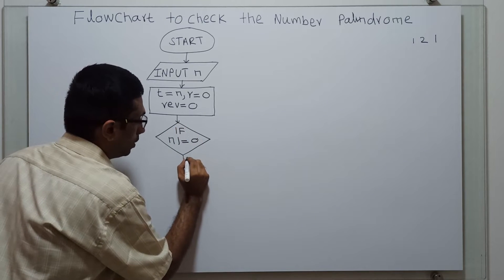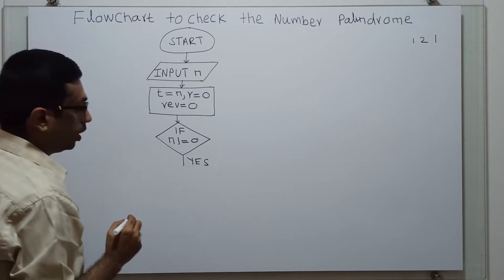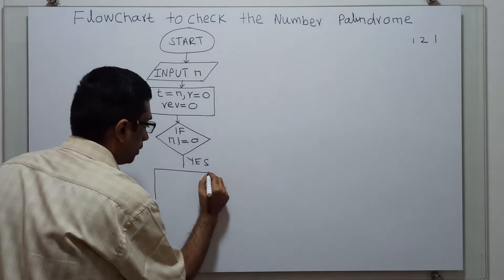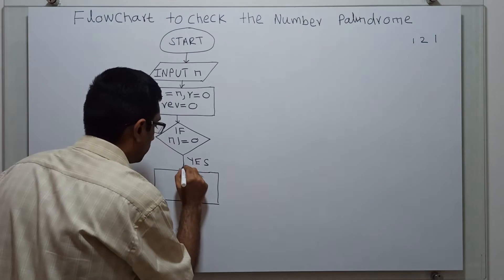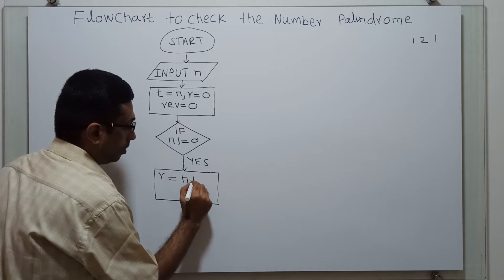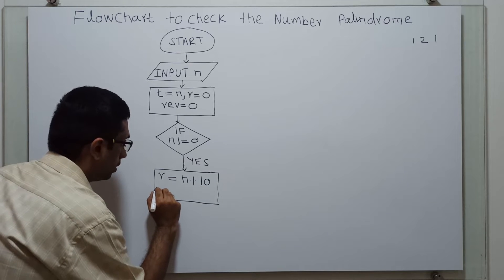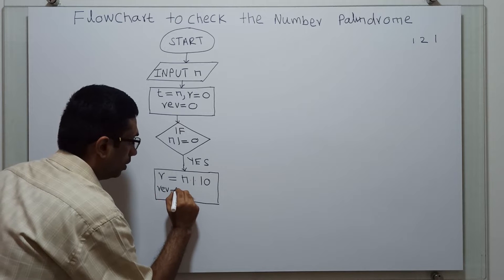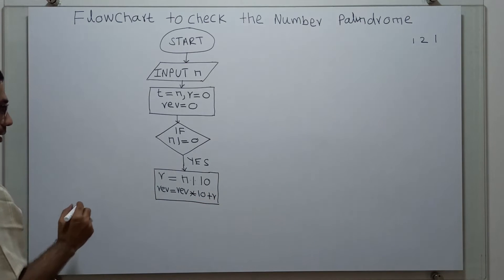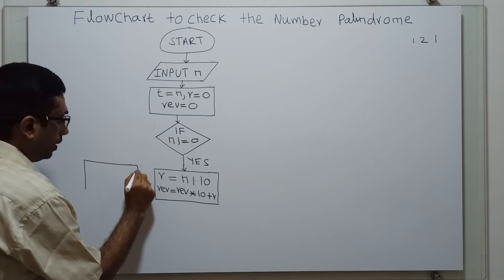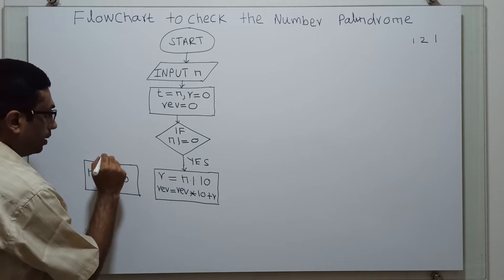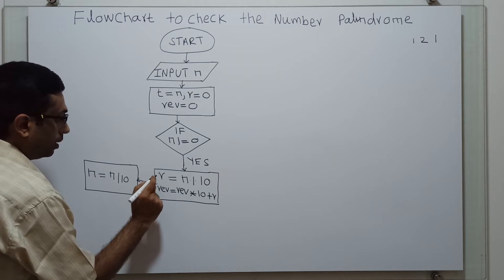If N is not equal to 0 — that is the yes branch — then the variable R is equal to N modulo 10. Then reverse is equal to reverse multiplied by 10 plus R. Next step, we have N equal to N divided by 10. This is an integer division.